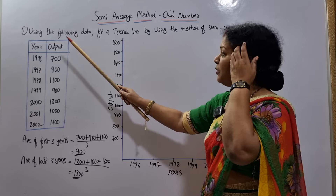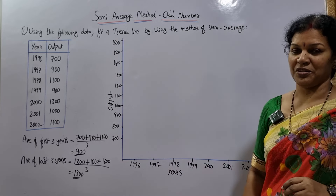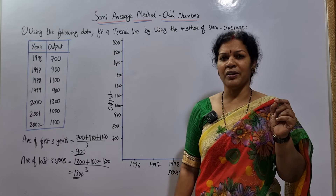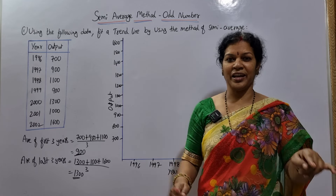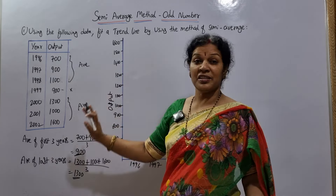The problem is: using the following data, fit a trend line by the method of semi-averages. Looking at the data, there are seven values — that's an odd number. If it were an even number, say six, we'd split into two groups of three, add and average each group. But with seven numbers, you ignore the middle number and take the average of the first three and the average of the last three. For nine numbers, leave the middle and take the first four and last four.